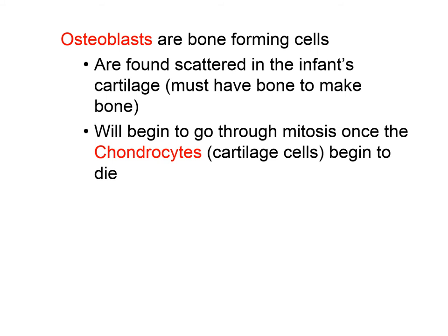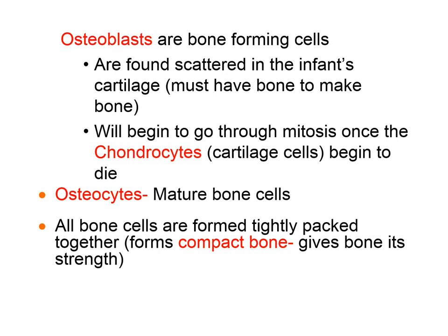This is why it's called endochondral — it occurs inside the cartilage. Eventually over time, the cartilage gets replaced by bone. You and I no longer have osteoblasts; we now have mature bone cells called osteocytes. Remember, all bone is initially formed as compact bone. Osteoblasts are the cells that infants have to form the skeleton we now have.